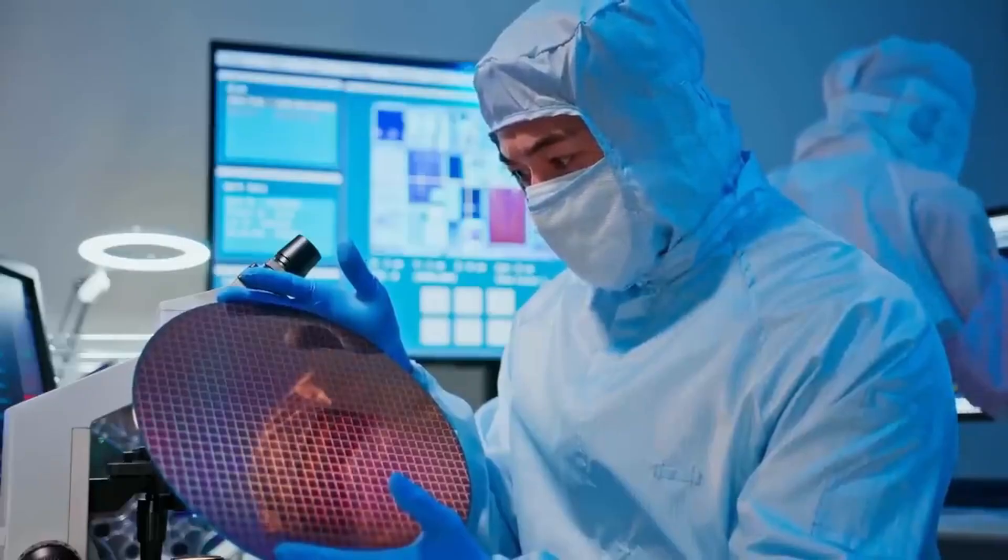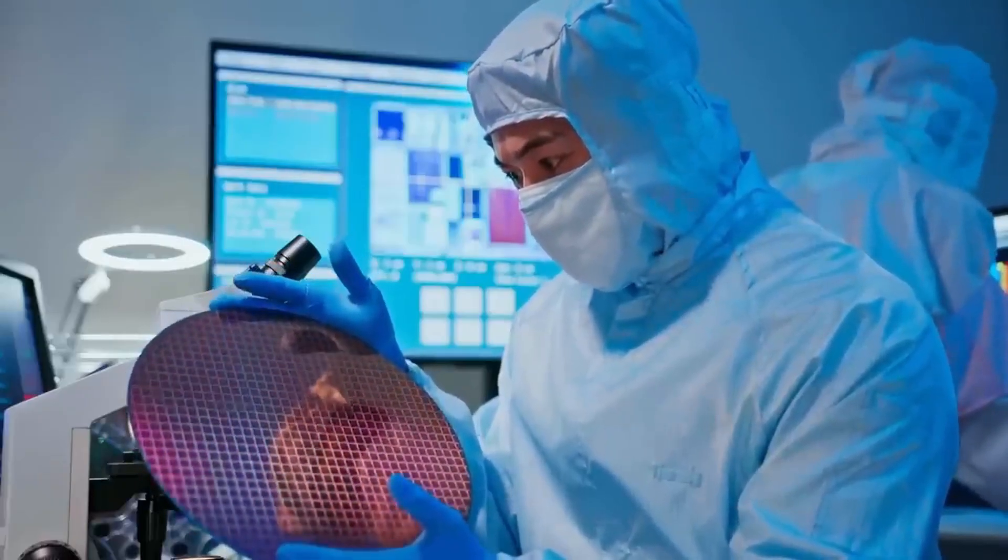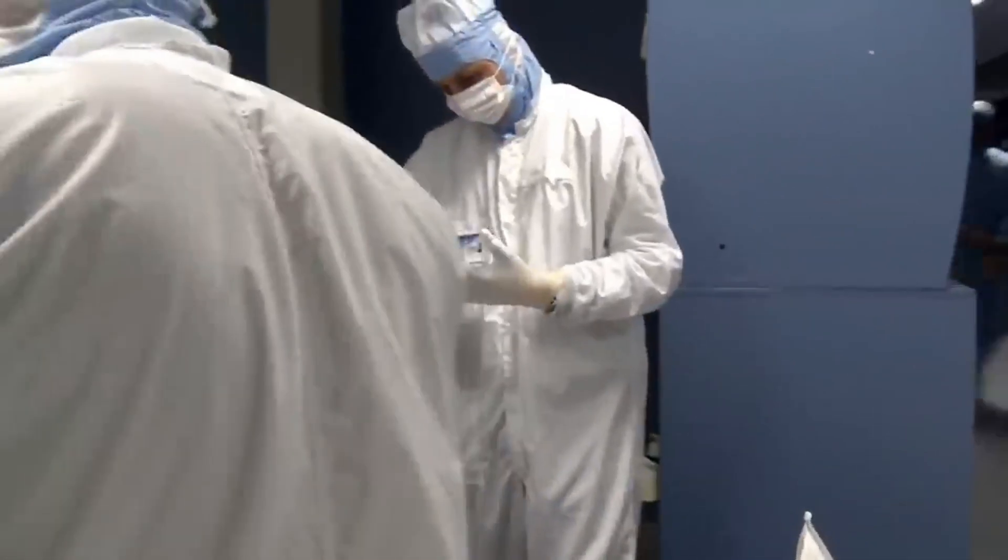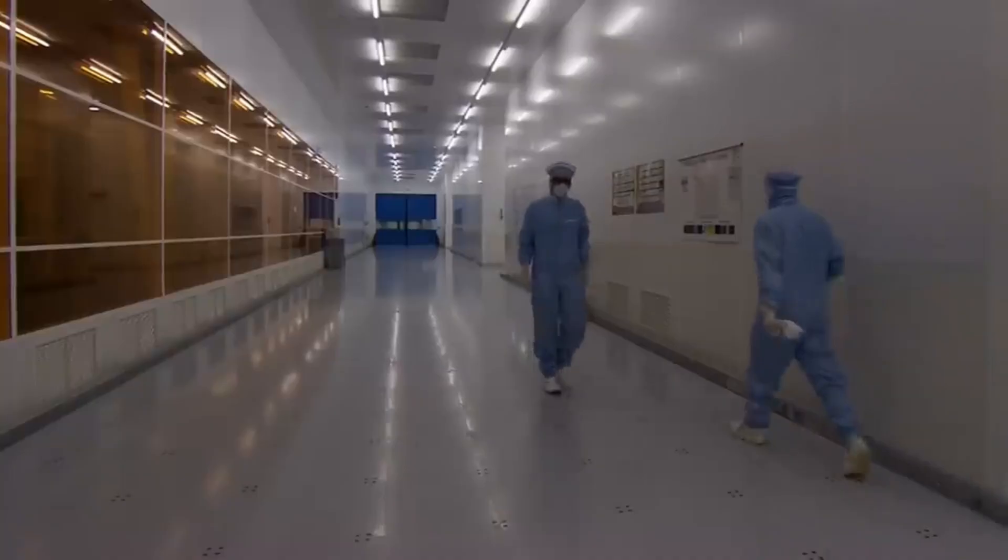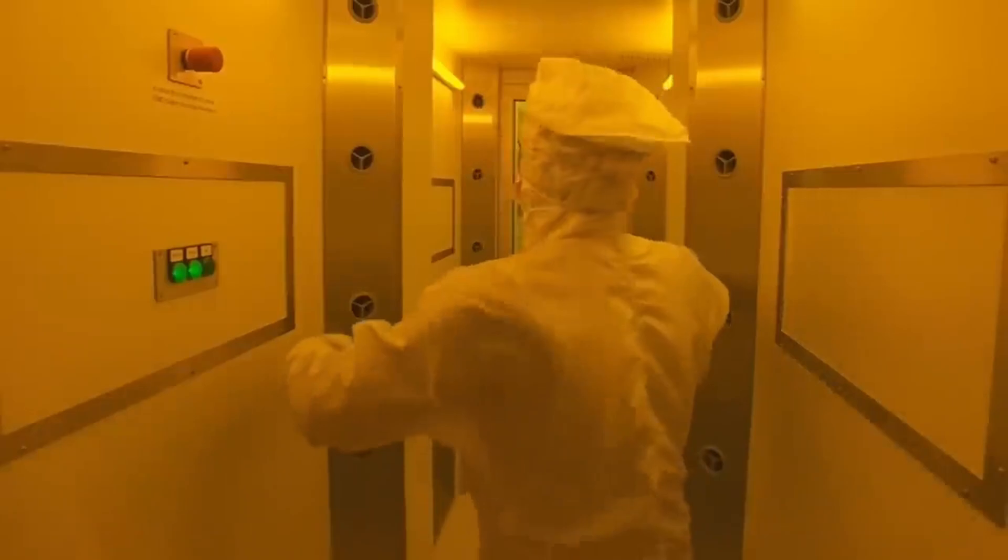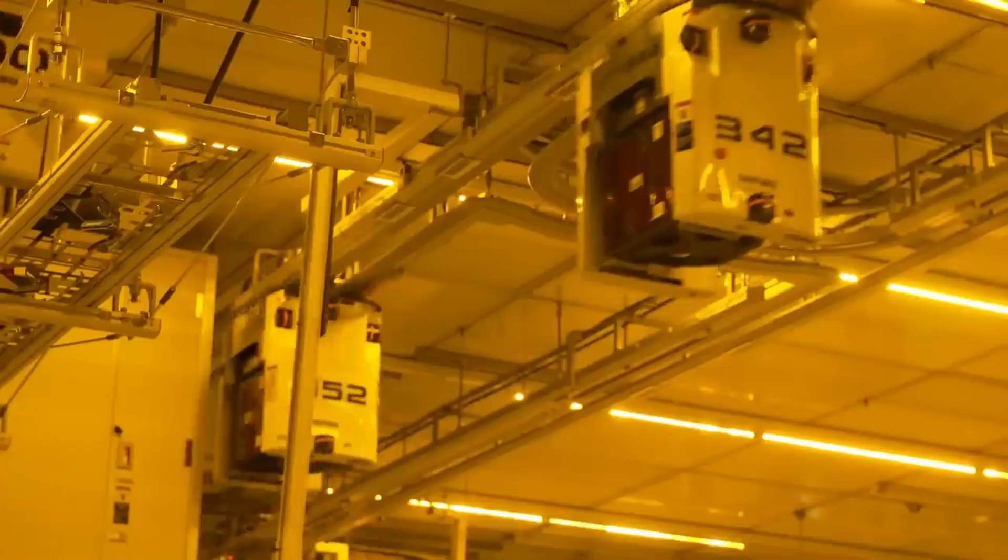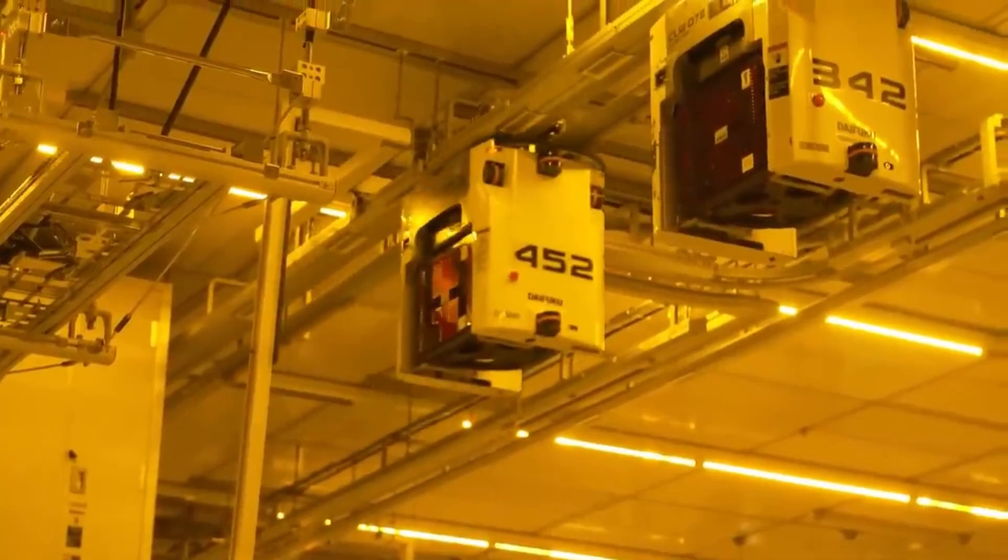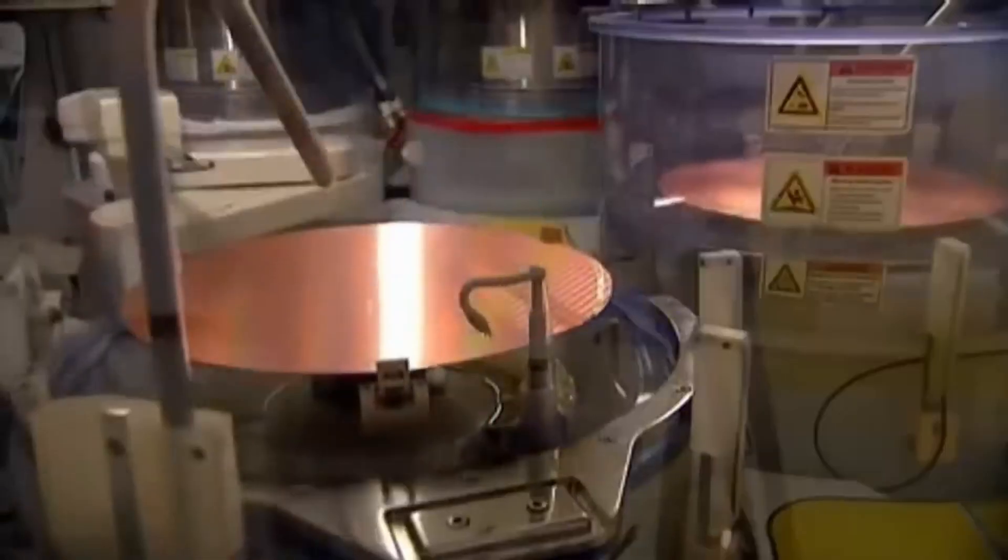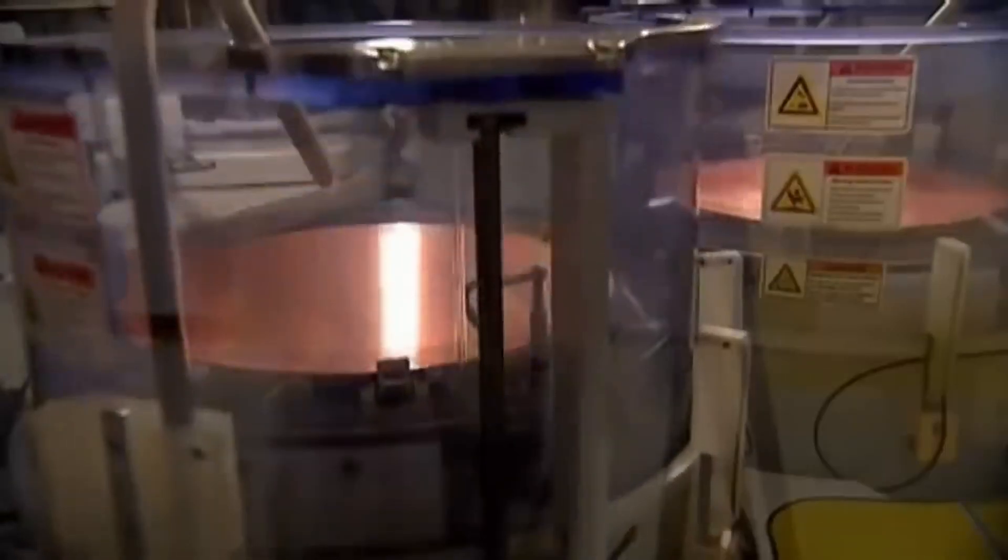When working with things this small, even a single speck of dust can be a disaster. The tiniest particle could cause a short circuit and ruin an entire chip. That is why microchips are made in clean rooms that are even more sterile than an operating room. These rooms can be as large as a stadium. And the air is constantly filtered with special systems that renew it every few minutes. Workers in these rooms wear special suits that cover their entire bodies, just like astronauts. Before entering, they go through air showers that remove any dust or dirt. All of this is to make sure the silicon wafers stay completely clean throughout the entire process.